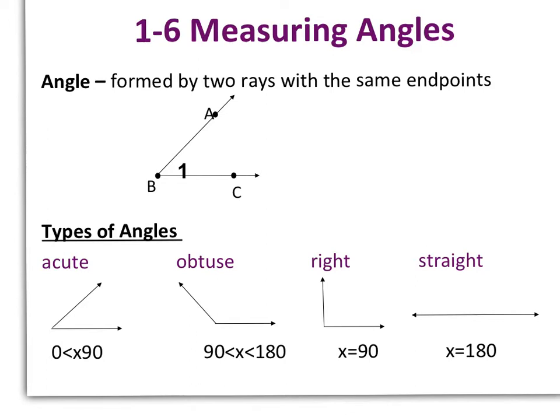There are four different types of angles. Acute angles are where the angle is between 0 and 90 degrees. An obtuse angle is an angle between 90 and 180 degrees.